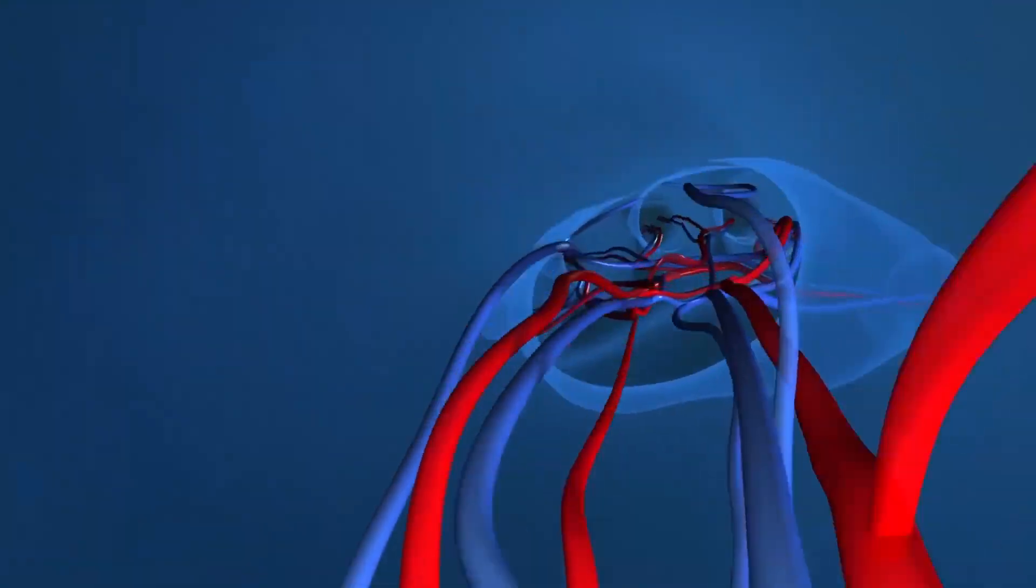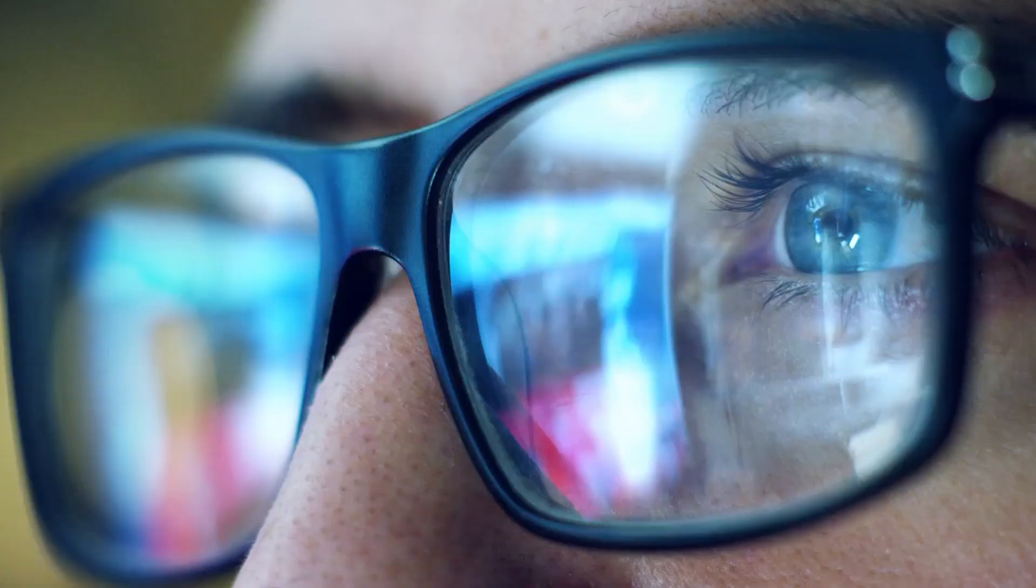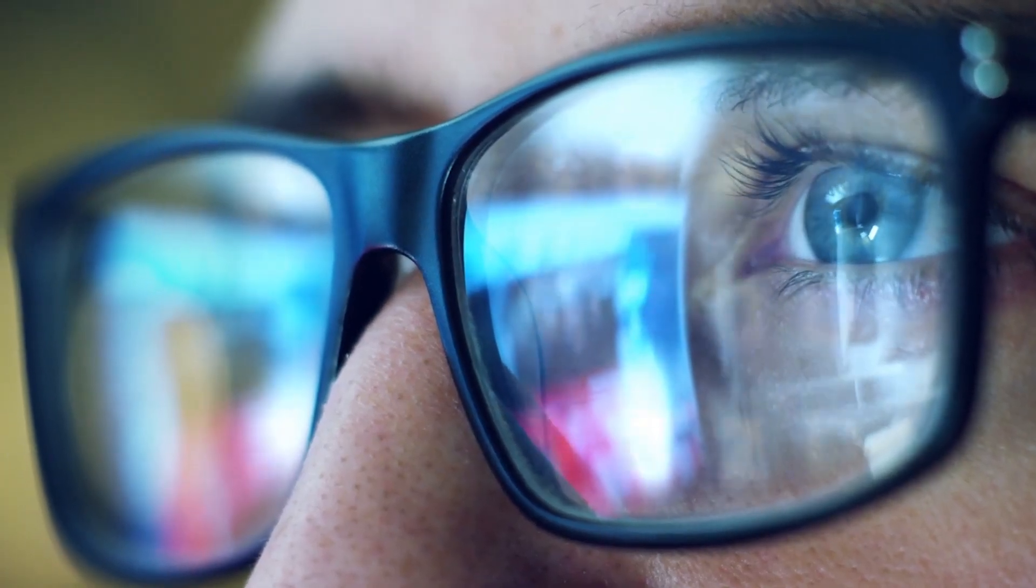Even our bodies display a fractal nature - the way blood vessels branch out like root systems, or how the brain houses folds within folds. This means that we are built to process fractals easily and efficiently, while at the same time being subconsciously drawn to the patterns.